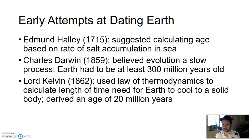Haley just suggested this. Darwin just threw an estimate out there based on how slow evolution was. Kelvin was the first to mathematically work it out to say 20 million years. That's far off, 4.54 billion.